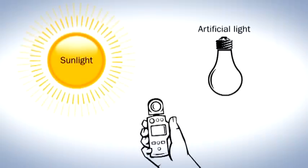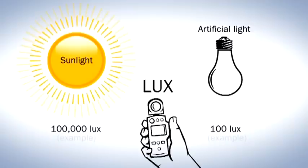The unit we use to measure the amount of light that falls in a given area is called lux. The more light that falls on a scene, the brighter the scene, the more lux.